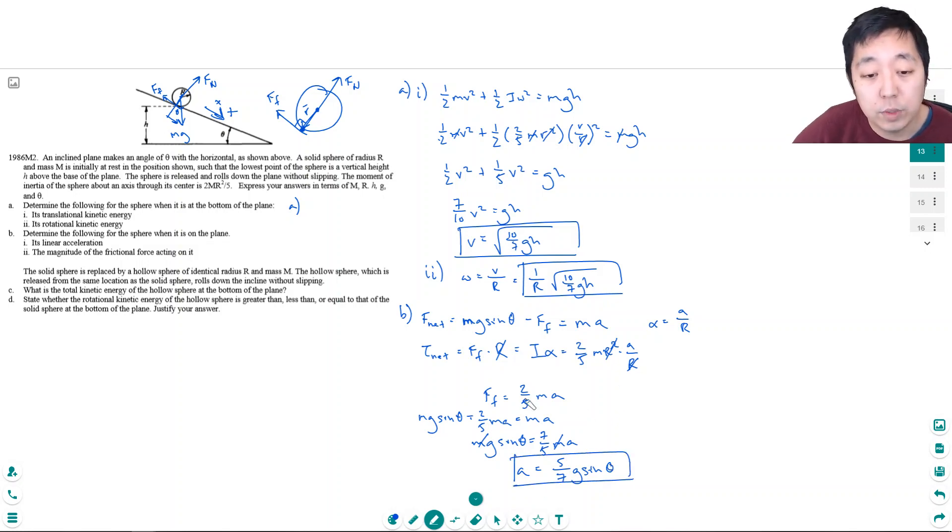And then we can calculate the force of friction by multiplying this by two-fifths. So the force of friction, which is the second part of this question, is equal to two-fifths times M times A, which we already determined which is five-sevenths G sin theta. So force of friction is equal to, the fives cancel, that would be two-sevenths Mg sin theta.